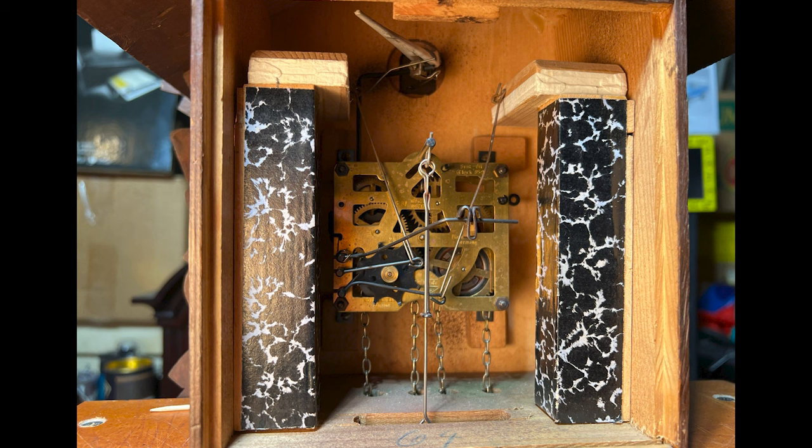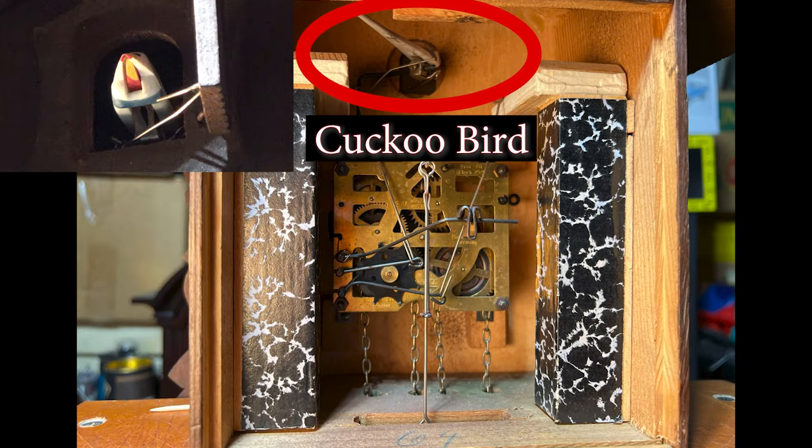There are four main components inside a cuckoo clock: the clock movement, the two bellows, the gong which is mounted to the back cover, and finally, the bird.